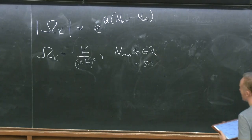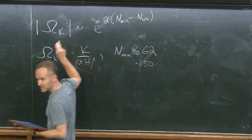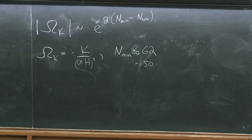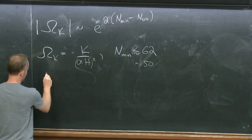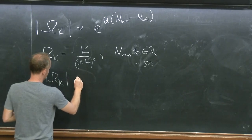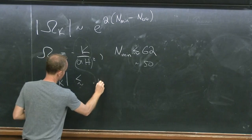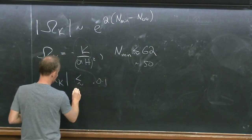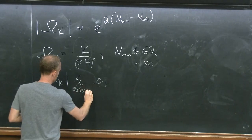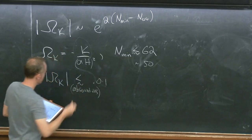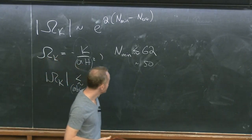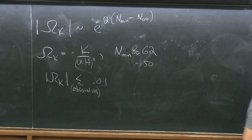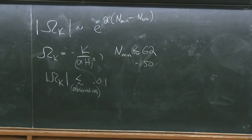One of the observables in cosmology directly related to inflation is the spatial curvature. If the spatial curvature were large, that would be very informative. It would have to be below the current observational limit, which is something like a little less than 0.01. So if we discover that omega_k is not zero — say 0.005 or something — that teaches us something very important. It tells us that if inflation happened, it only lasted a few more e-folds than the n_minimal value. It didn't last very long.